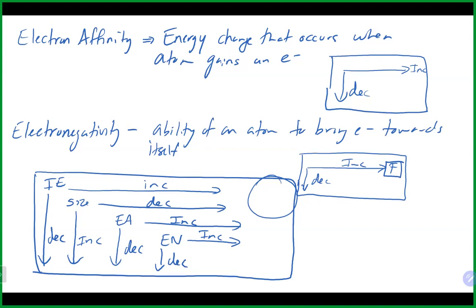As we go up and to the right on the periodic table — basically putting us in the region of non-metals — we have things with very high ionization energy, very small size where outer electrons are held tighter, high electron affinity meaning they like to gain electrons, and high electronegativity. All those trends together tell us that in the upper right of the periodic table, those are things that like to gain electrons — that's where we find our non-metals.